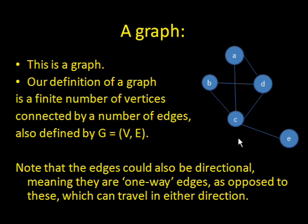Here. For our purposes, this is a graph here on the side. Our definition of the graph that we're going to use is a finite number of vertices that are each connected by a number of edges. In formal terms, you can define a graph as G, which is equal to the vertices and edges.